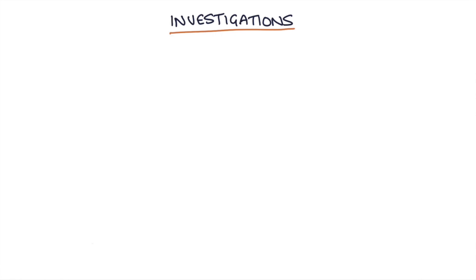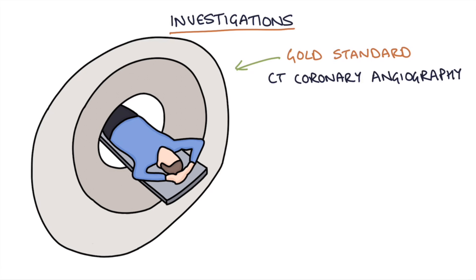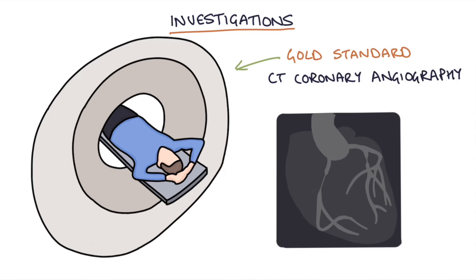How do we investigate somebody who has symptoms of stable angina? The gold standard investigation for assessing the coronary arteries is CT coronary angiography. This involves injecting a contrast agent and taking CT images timed with the heartbeat to give a detailed view of the coronary arteries, indicating whether there's any narrowing and how well blood is being supplied to the heart.